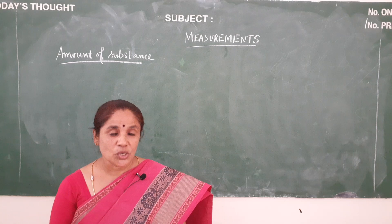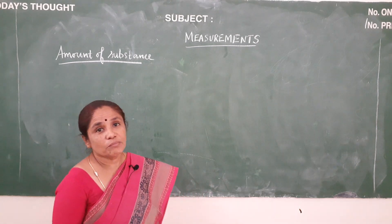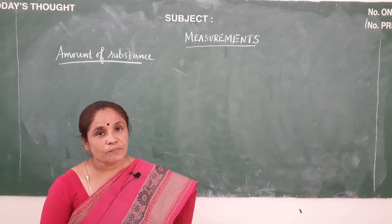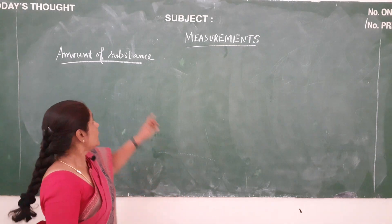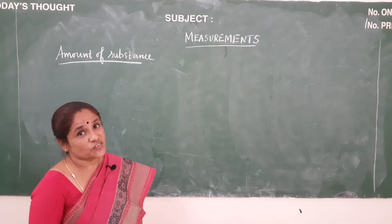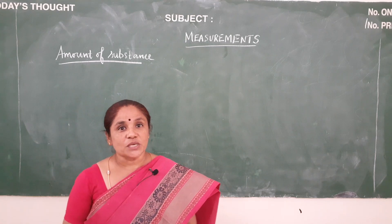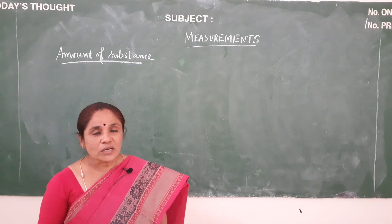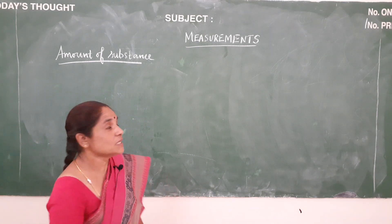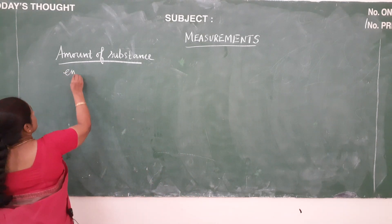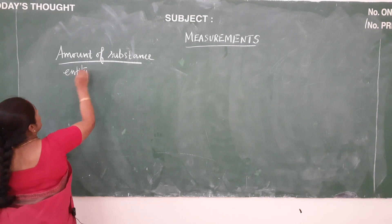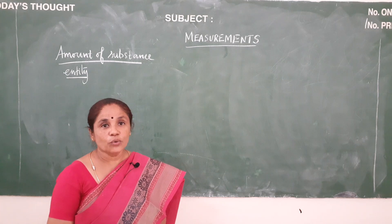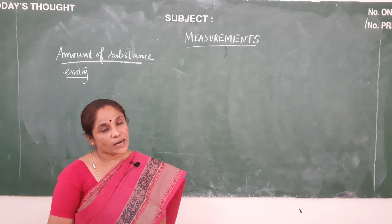So what method is used here? We have an indirect method to count the number of atoms or molecules. Before getting into it, let us see what is this amount of substance. Amount of substance is nothing but the number of entities present in the substance. This entity means either an atom, molecule, ion, proton, or electron.